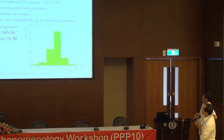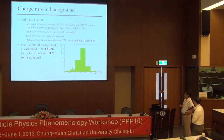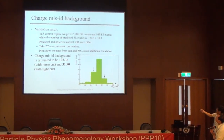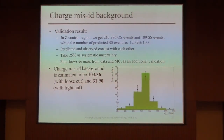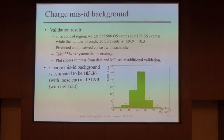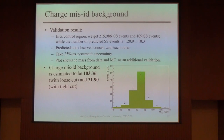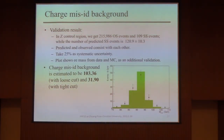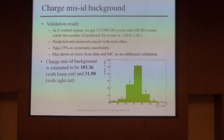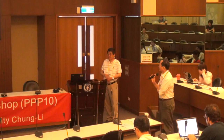A question was raised about how the 25% systematic uncertainty for charge misidentification was estimated. In the Z control region, we get about 15,000 opposite-sign events, but also observe 109 same-sign events, which should ideally be zero for a pure Z sample. Applying the Monte Carlo mischarge rate to the opposite-sign control sample predicts 120 same-sign events. The difference between the observed 109 and the predicted 120 is about 25%, which is taken as the systematic uncertainty for charge misidentification. The session then concludes with thanks to the professor.